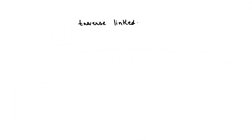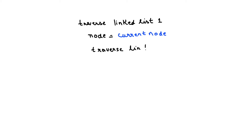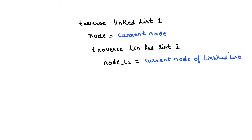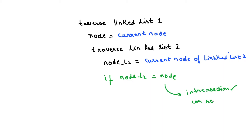A simple solution would be to traverse linked list one, take a variable holding the current node of linked list one, and at each point traverse the whole linked list two with another variable keeping the current node of linked list two. We check whether the node of linked list one equals the node of linked list two — if they are equal, that is the intersecting point and we return it. However, this solution is not that efficient.